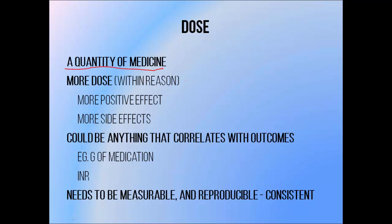Dose should also be related to the effect of that medicine. More dose should mean more effect, both more positive effects and more negative side effects. In theory it could be anything that correlates with treatment outcomes, for example milligrams of medication, although oral drug doses are a very imprecise measure of how much of a drug will actually reach the bloodstream. It's normally good enough for over-the-counter drugs, since the amount of drug reaching the place where it acts doesn't need to be terribly precise.